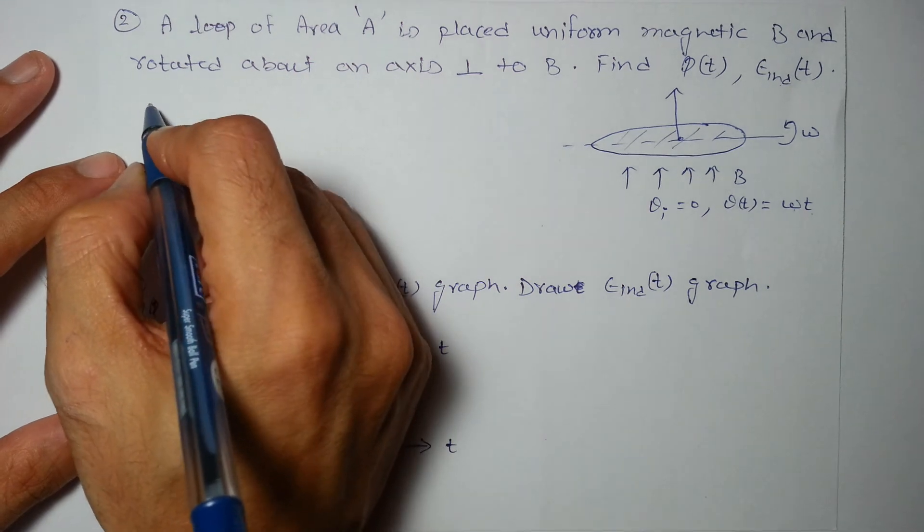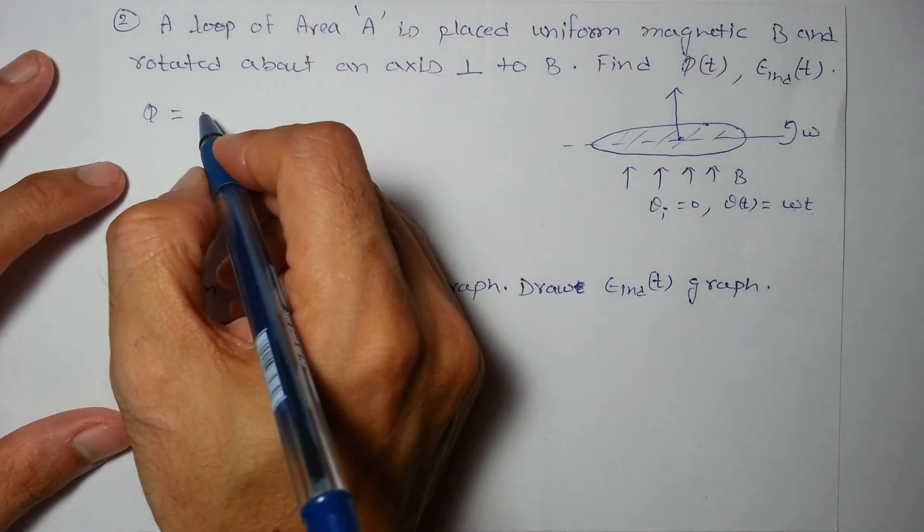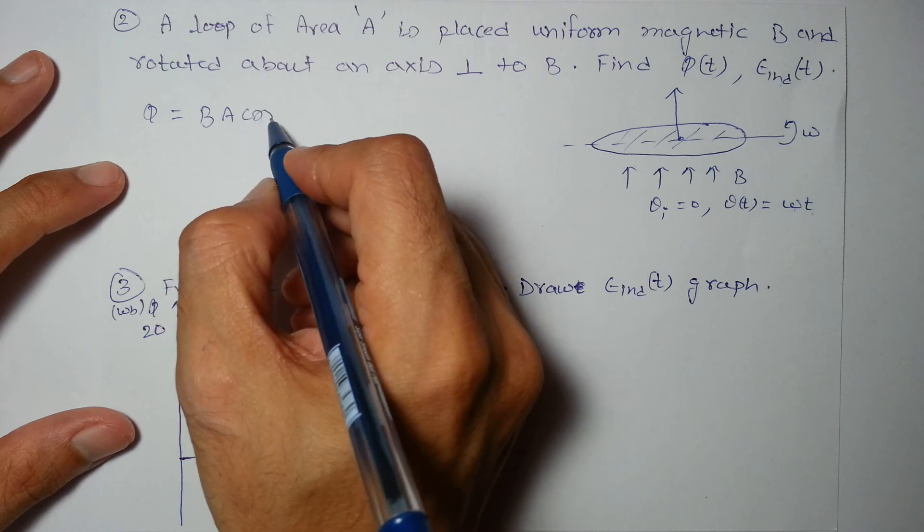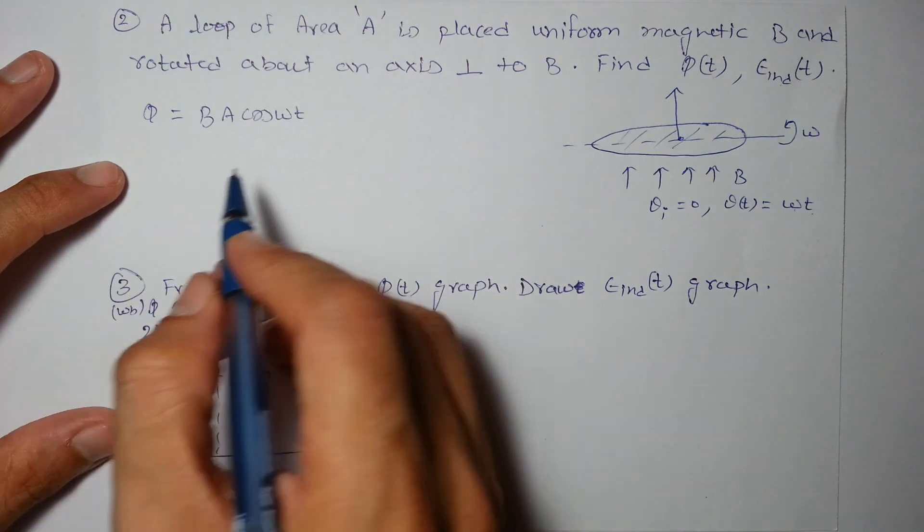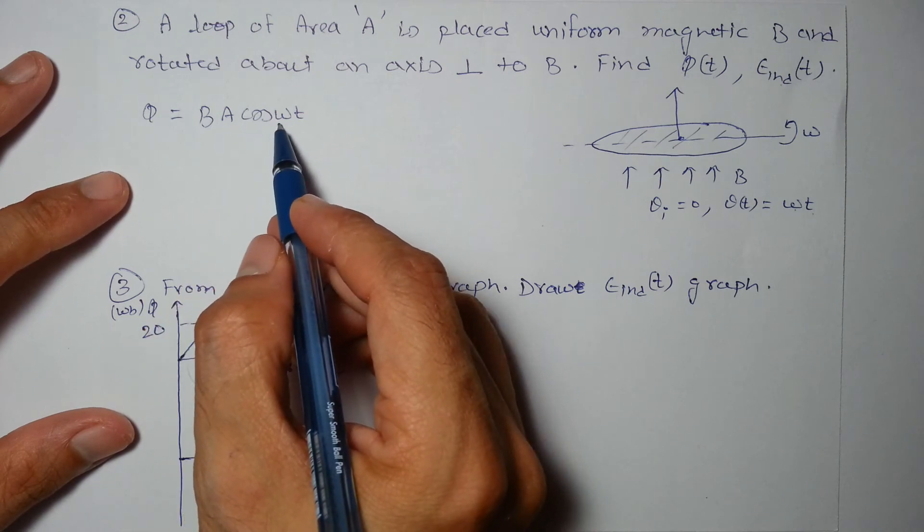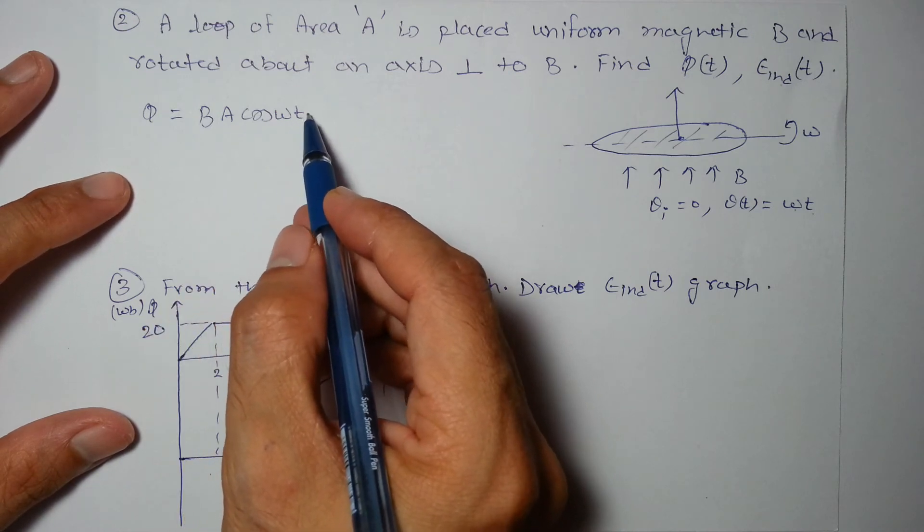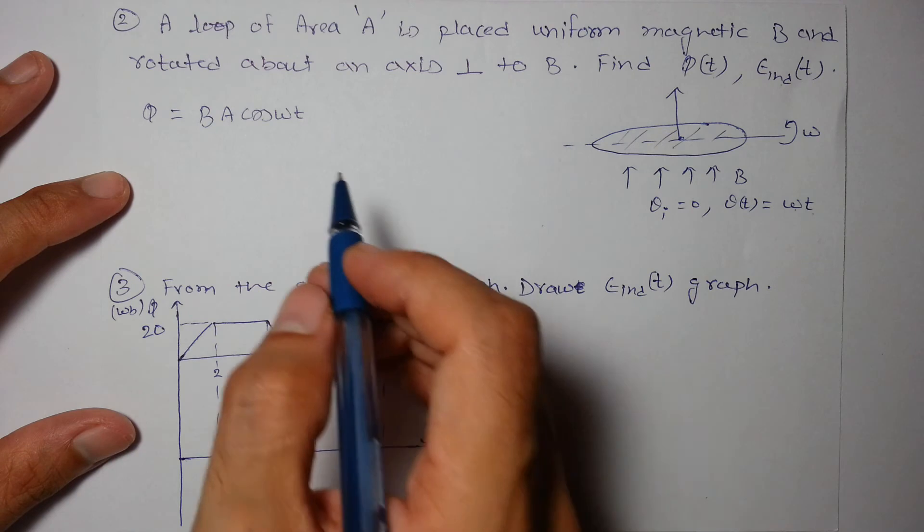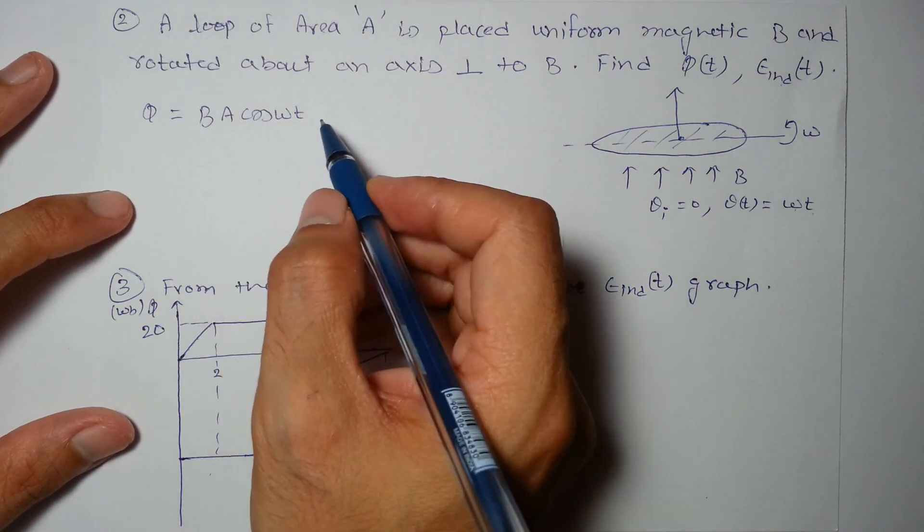So flux will be B × area × cos(ωt), because the angle between B and A as a function of time will be ωt. We can also write ωt + φ_0 if initial angle is φ_0, but we have assumed initial angle to be 0.